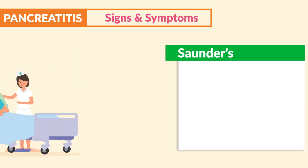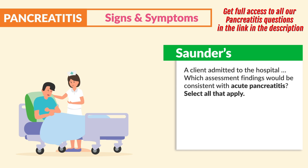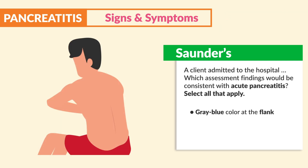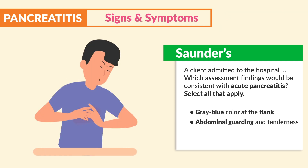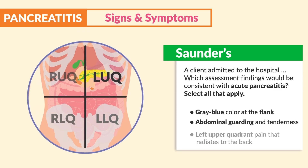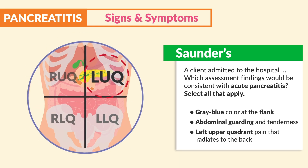Saunders mentions: which assessment findings would be consistent with acute pancreatitis? Select all that apply. The answers are: gray-blue color at the flank, abdominal guarding and tenderness, and left upper quadrant pain that radiates to the back. Write these three down and know them.